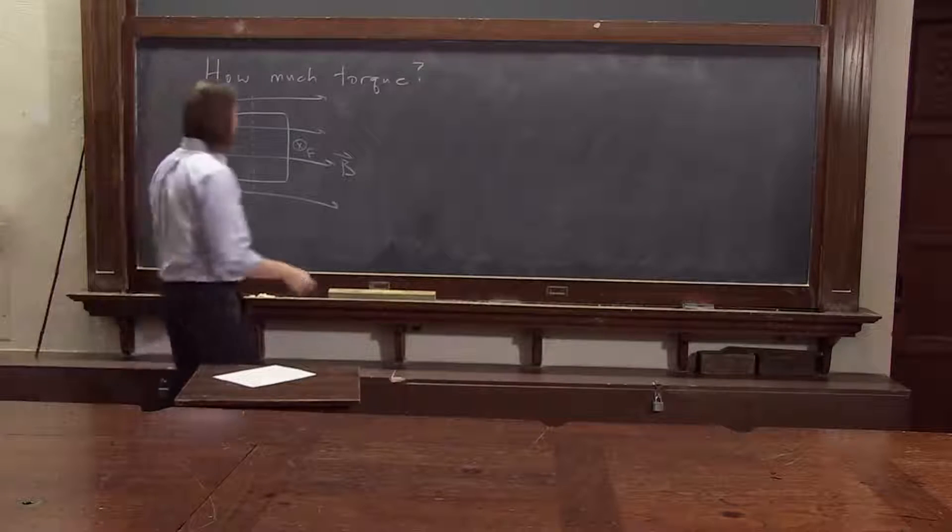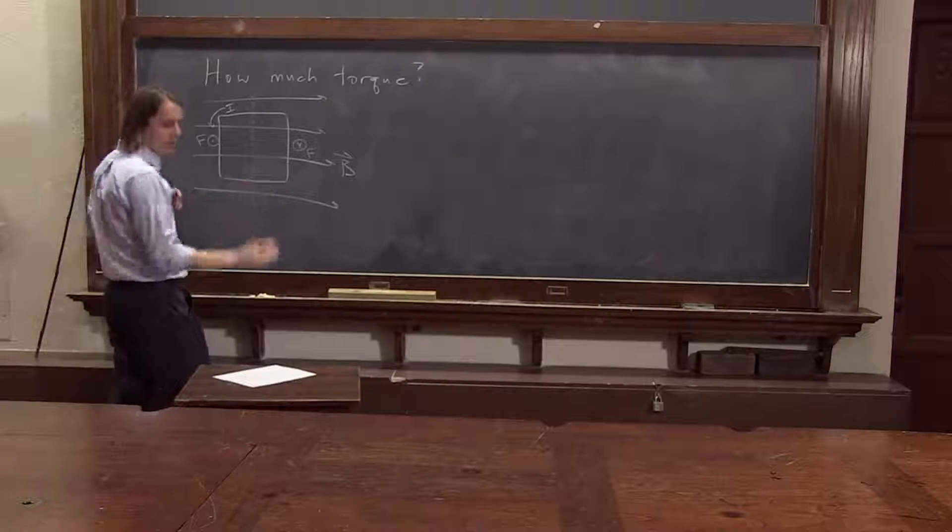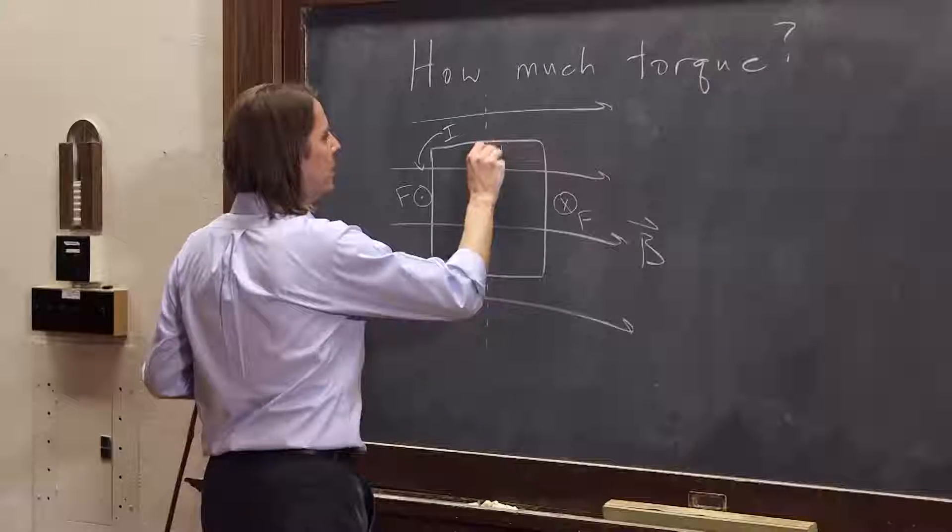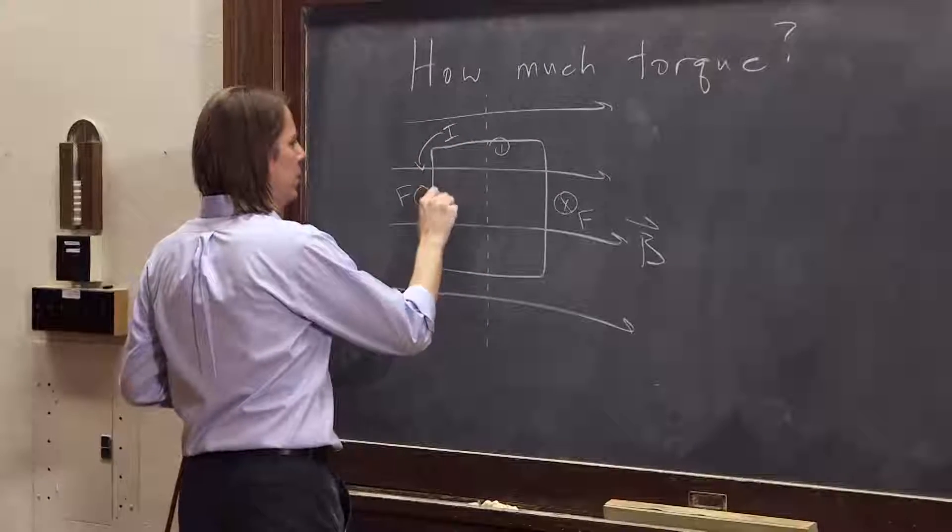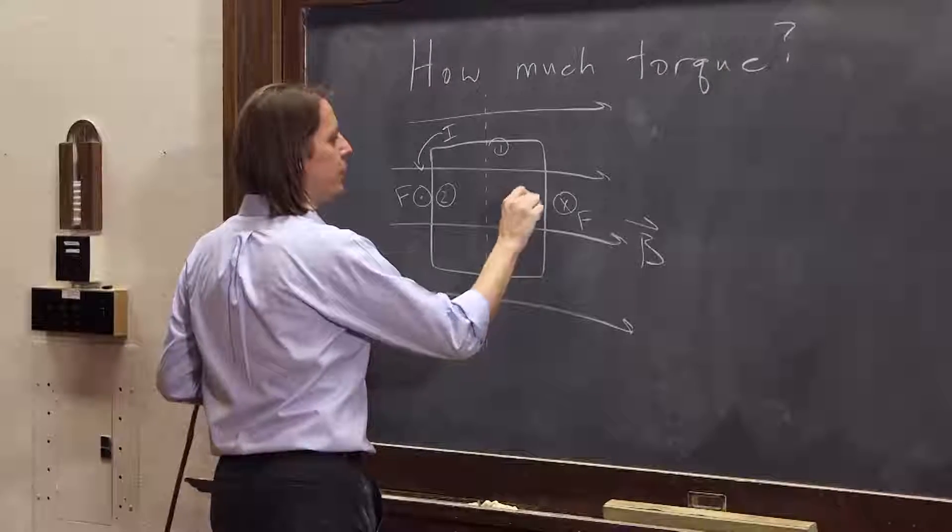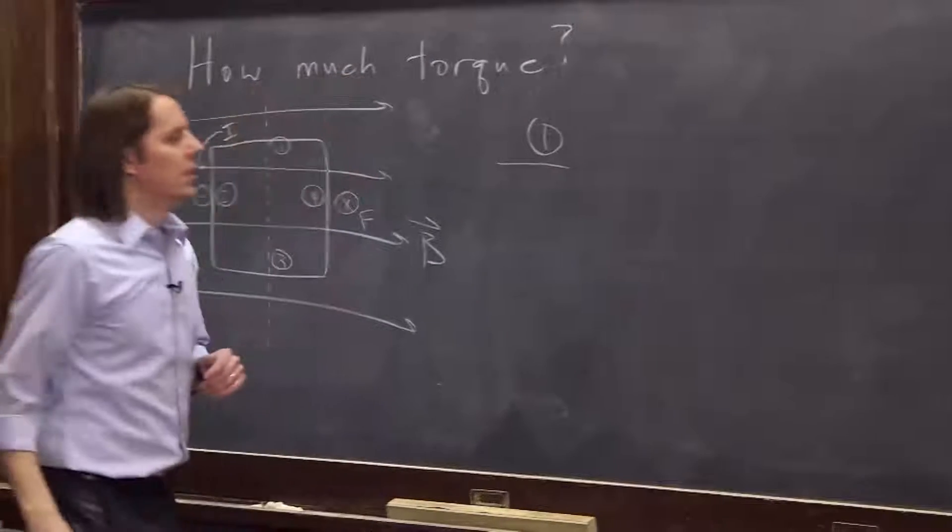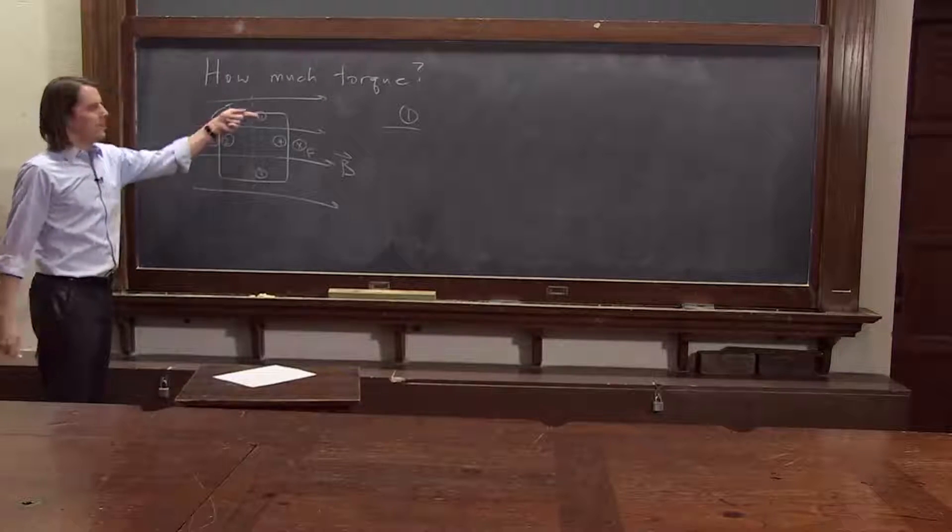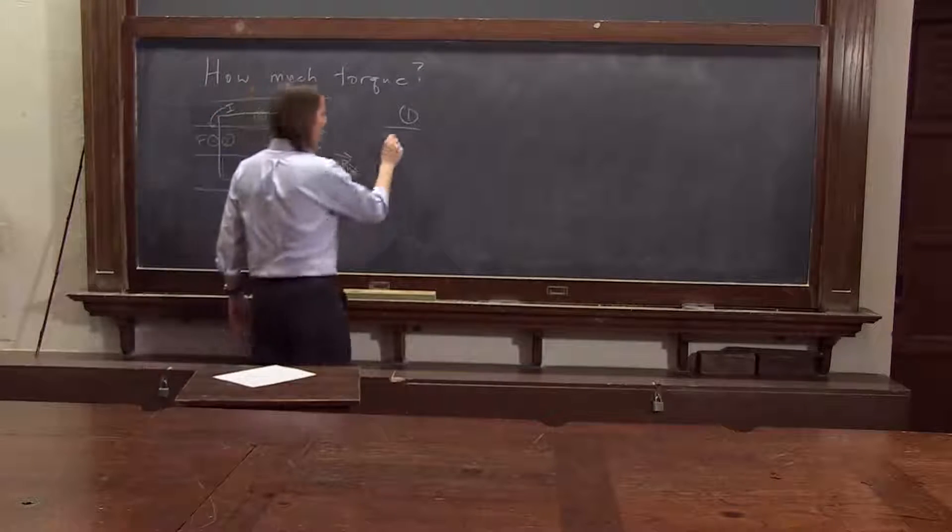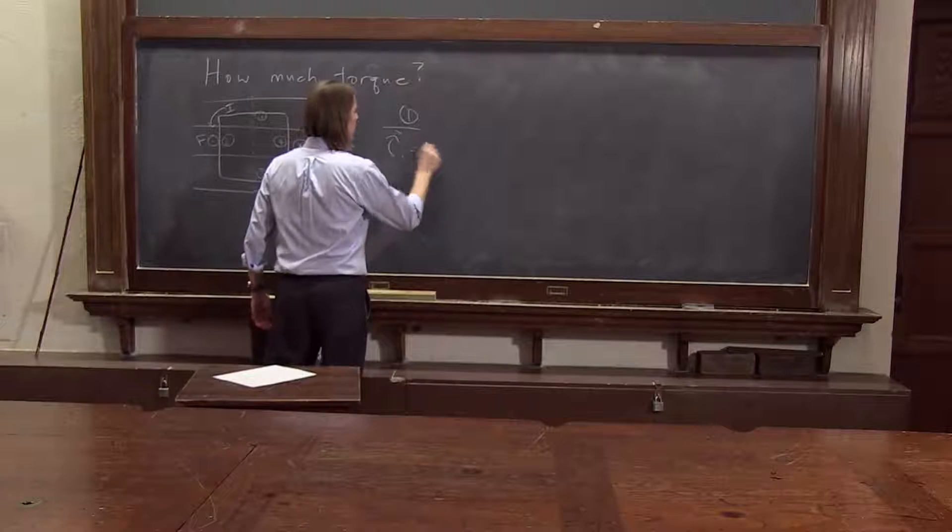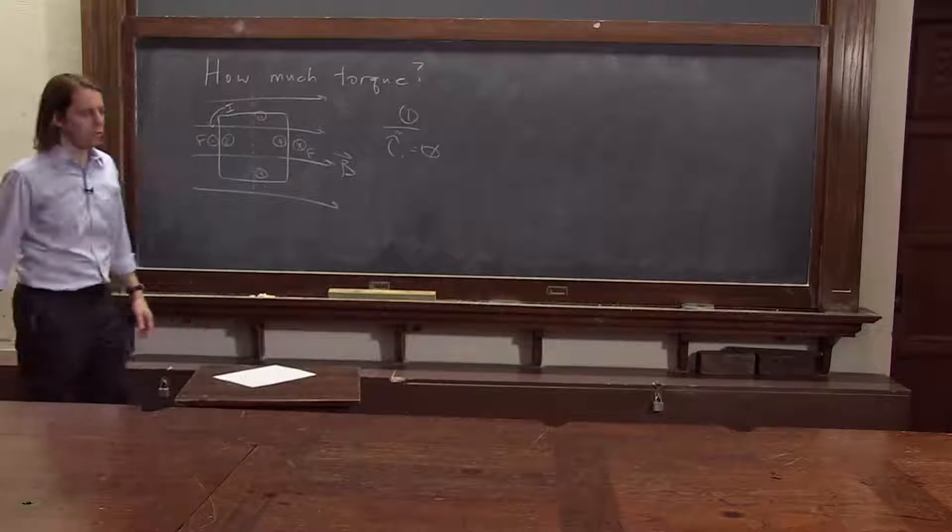Let's calculate how much. Well, to get the torque, we can use the same four sides. We had four sides to calculate the force. Let's use four sides to calculate the torque. One: R cross F. Well, if F is zero, the torque is zero. So torque one is zero because there's no force there.